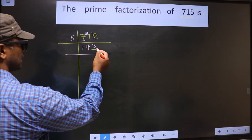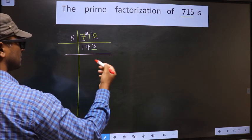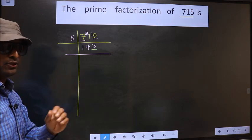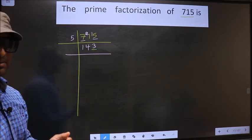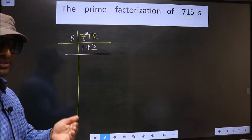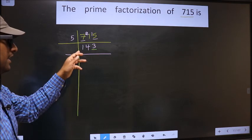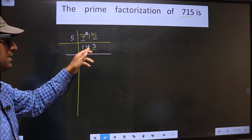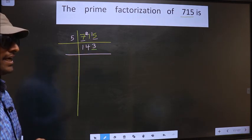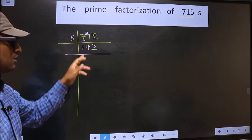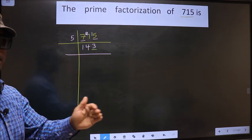Now for this number, the last digit is 3 which is not even, so this number is not divisible by 2. Next prime number is 3. To check divisibility by 3, we add the digits: 1+4+3=8. Is 8 divisible by 3? No, so this number is also not divisible by 3.